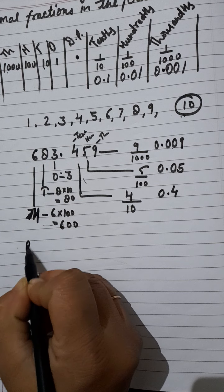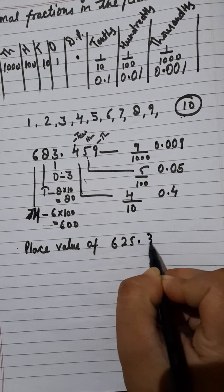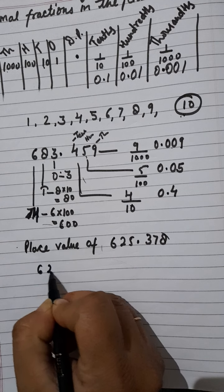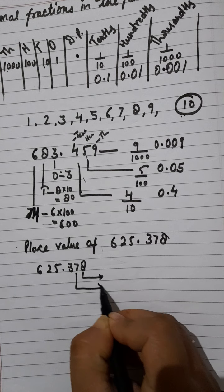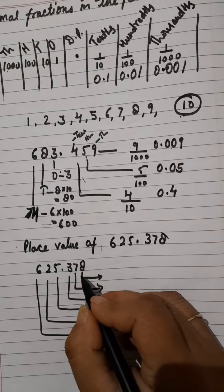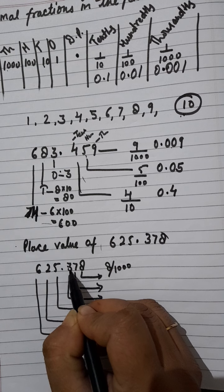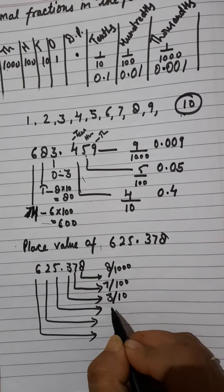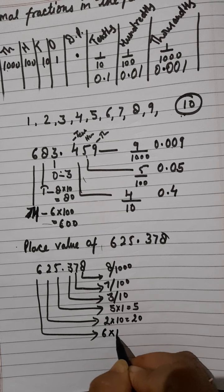Now let's take one more example. We have to write the place value of 625.378 in each digit. The digits are 8, 7, 3, 5, 2, and 6. The place value of 8 is in the thousandths place. 3 is in the tenths, 7 is in the hundredths. The place value of 5 is 5, 2 multiplied by 10 is 20, and 6 multiplied by 100 is 600.